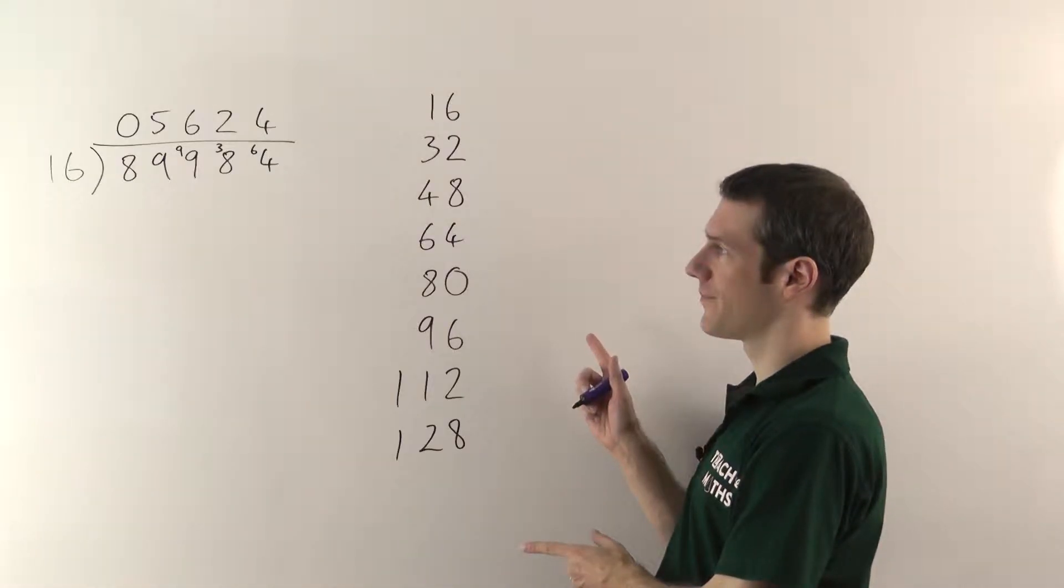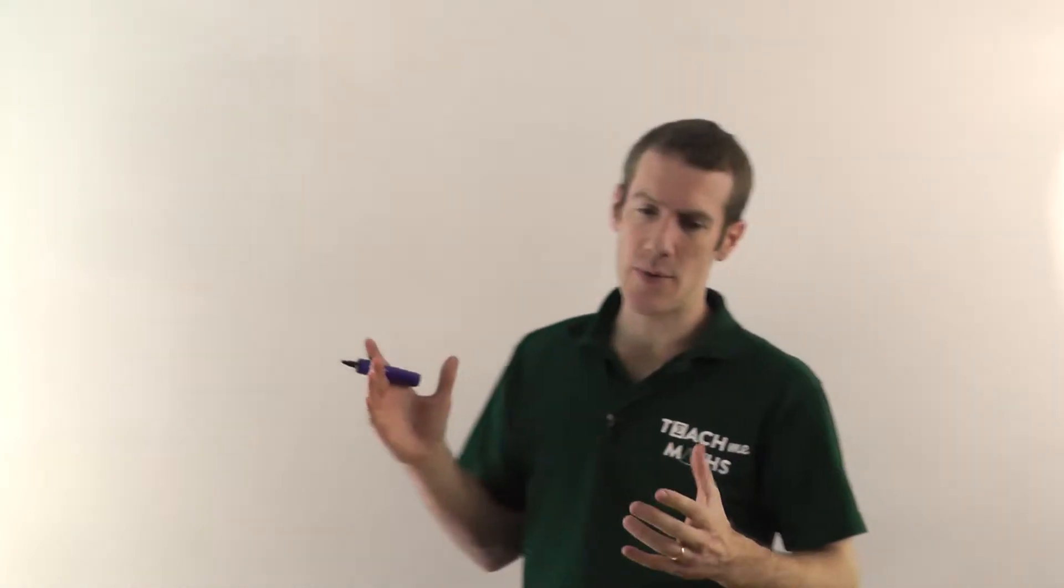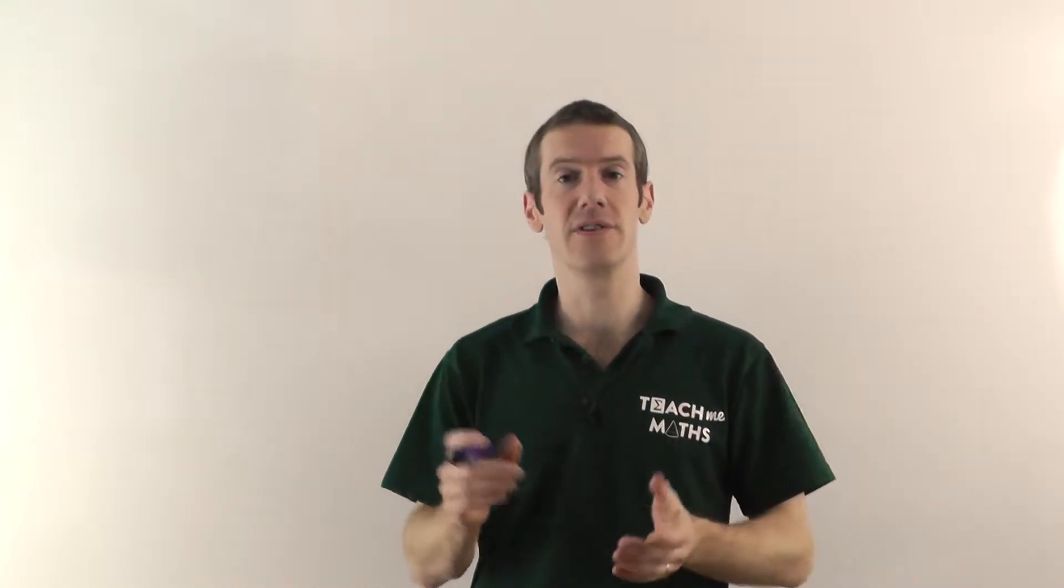But there's also a shorter method where you effectively use short division to do the long division. It's a lot easier, I think, and it tends to look like that. A lot less going on there, I think a lot better. Anyway, so those are your different types of division, your short and your long division.